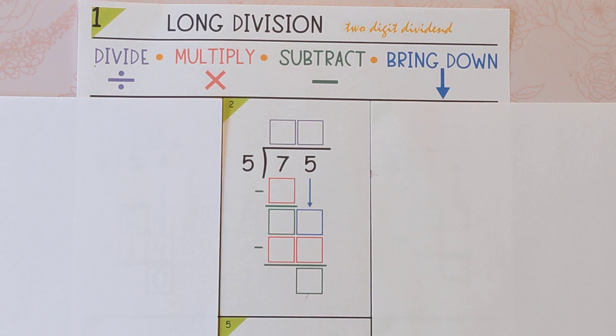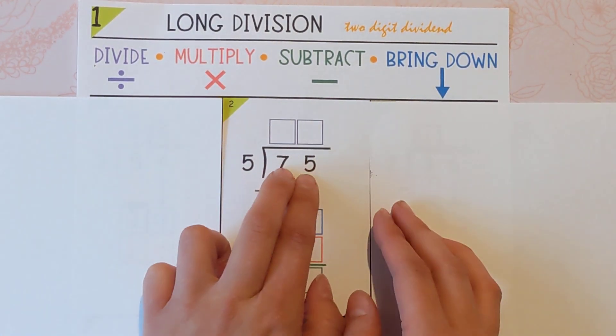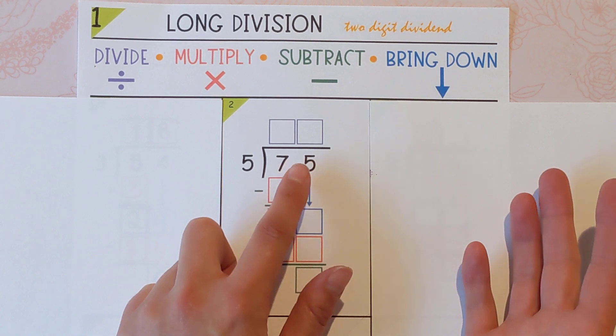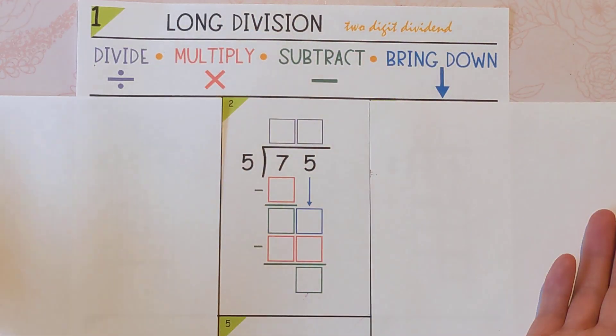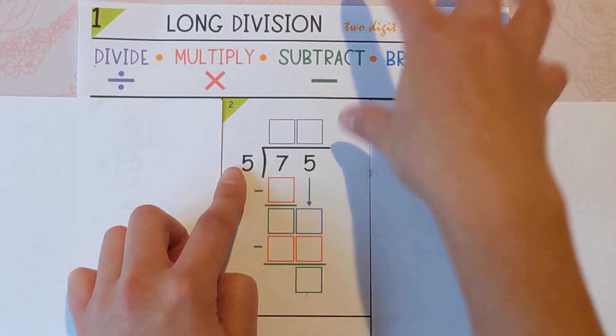We'll go ahead and get started. The first step is to divide, and we're using this 5 because that's the number that we're dividing this into. So this would be like say I have 75 Pokemon cards and I decide to divide them up amongst my 5 friends. How many does each friend get? So this is the big number divided into 5 groups.